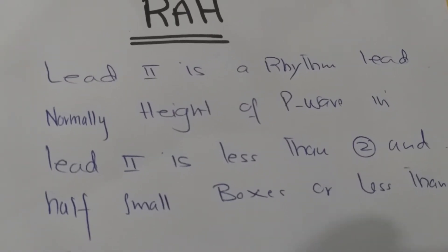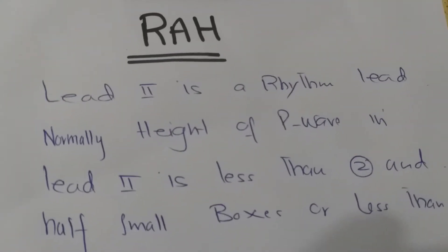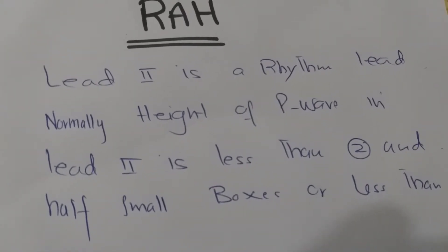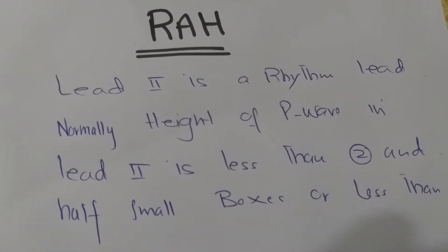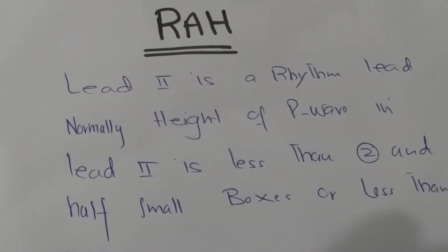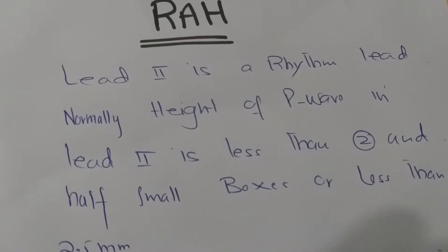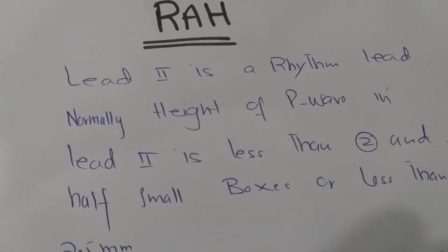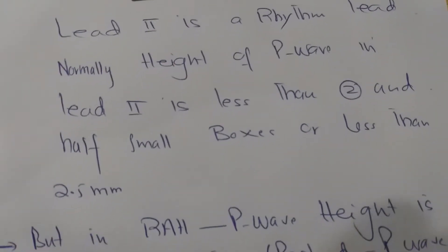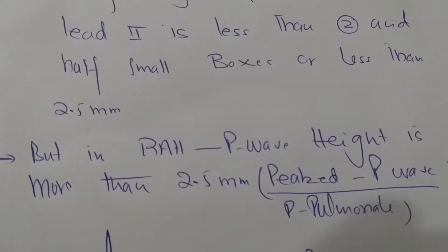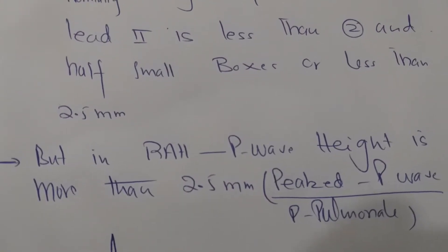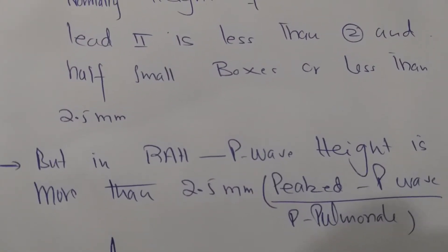To know if right atrial hypertrophy is present, we look at lead 2, known as the rhythm lead of the ECG. Normally the height of the P wave in lead 2 is less than 2.5 small boxes, or less than 2.5 mm in height. But in cases of right atrial hypertrophy, the height of the P wave is more than 2.5 mm and we call it P pulmonale, or peaked P wave.